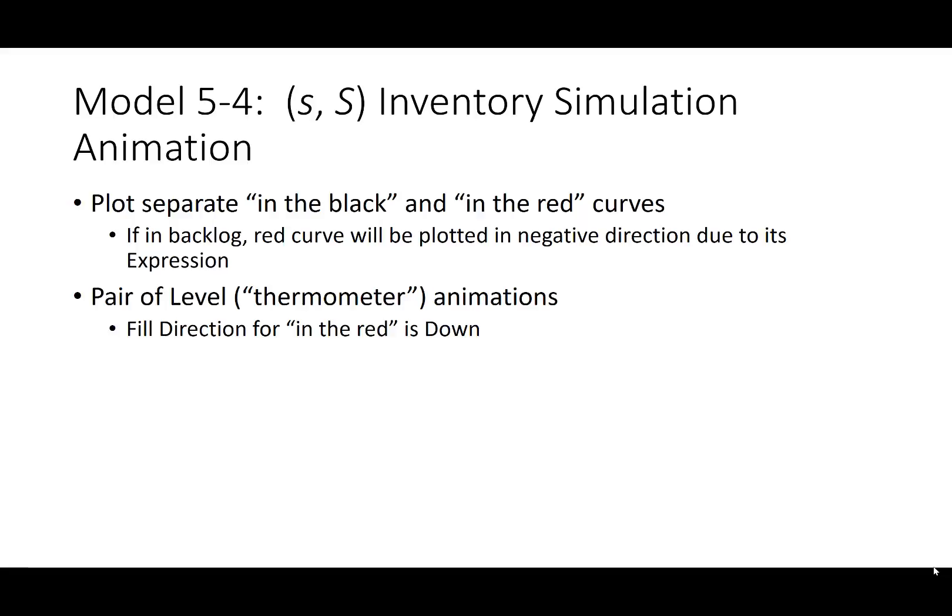For animation, plot separate black and red curves — black for positive inventory and red for negative. You could also use a pair of level thermometer animations where negative values go downward in red and higher positive values fill the thermometer upward. This concludes our discussion on advanced modeling.